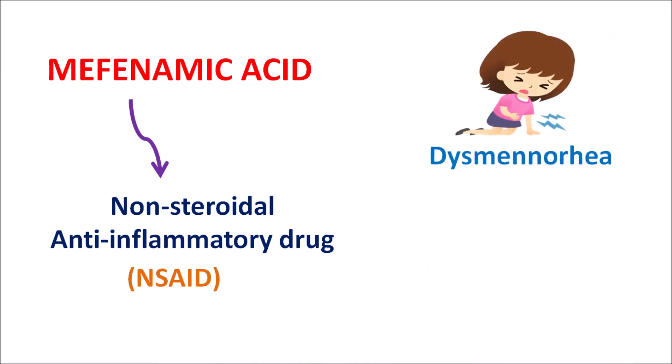This drug can be used to control menstrual pain during menstruation, or pre-menstrual pain can be controlled by mefenamic acid. Many times this drug is combined with another drug, dicyclomine, which is an anticholinergic agent that produces relaxation of GI smooth muscle. So dicyclomine can be combined with mefenamic acid to help control pain during menstruation.